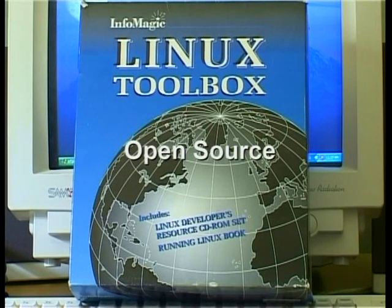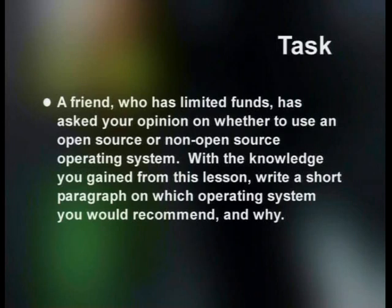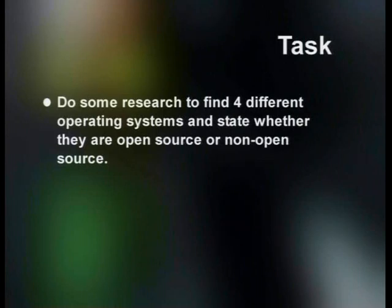An example of an open source operating system is Linux. You only need a license for Linux if you are planning to change the source code — this license gives you permission to do so. However, you are also agreeing to other people being allowed to make changes on your changes. Now, let's test what you have learned with a task. A friend who has limited funds has asked your opinion on whether to use an open source or non-open source operating system. Write a short paragraph on which operating system you would recommend and why. Also, do some research to find four different operating systems and state whether they are open source or non-open source.